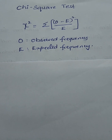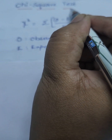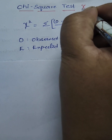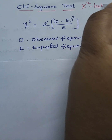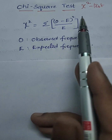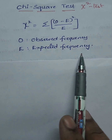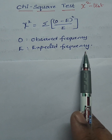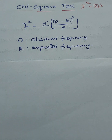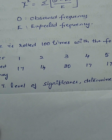Hi viewers, today in this video we are going to learn about chi square test in statistics and research methodology. Chi is an alphabet, and this can also be written as chi square test. The formula is: chi square is equal to sigma summation of O minus E whole square upon E, where O is the observed frequency and E is the expected frequency of the given frequency distribution.